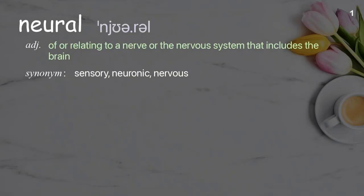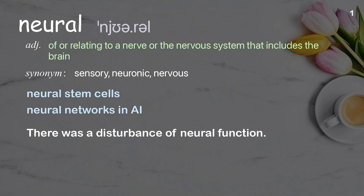Neural. Of or relating to a nerve or the nervous system that includes the brain. Examples: neural stem cells, neural networks and AI. There was a disturbance of neural function.